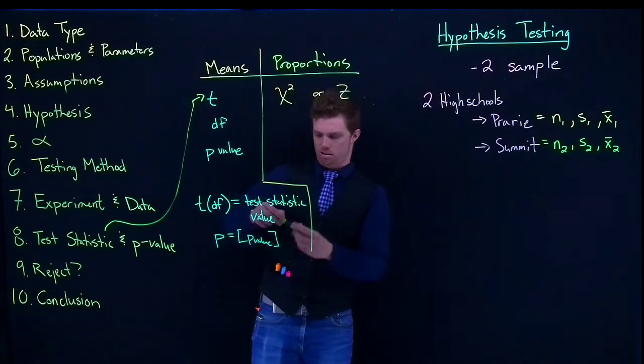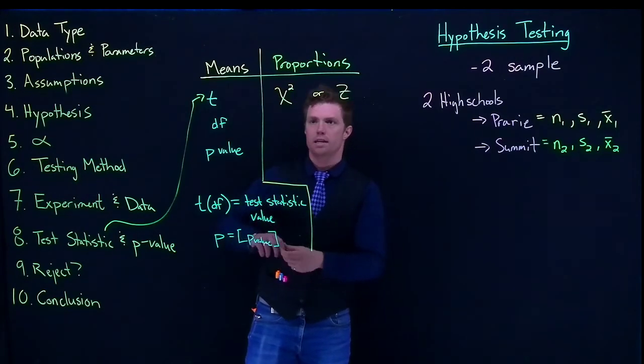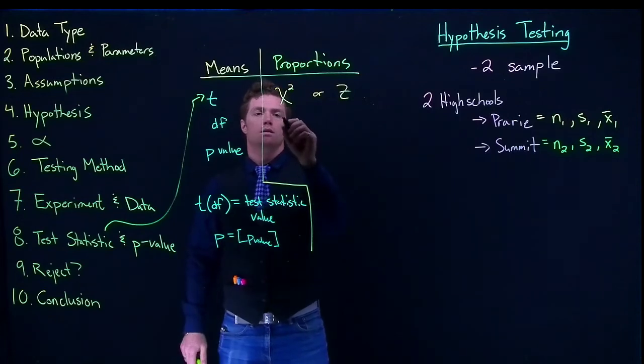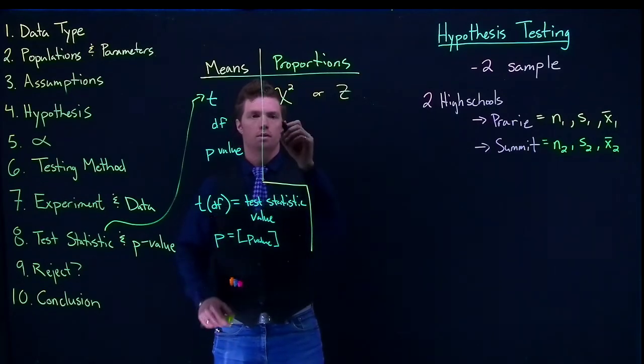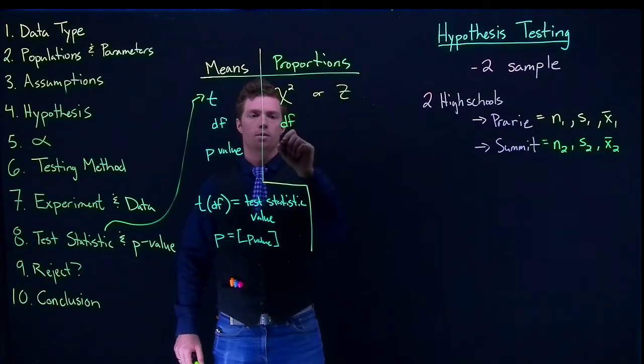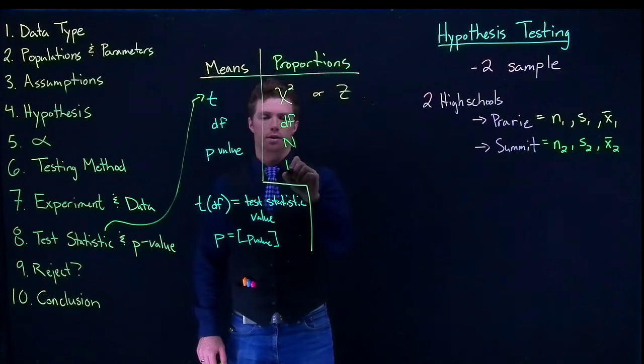With our chi-squared, we need a couple more pieces. So the degrees of freedom is the number of groups minus one. We're going to need to know the sample size, we put it as our n, and we also need our p-value.